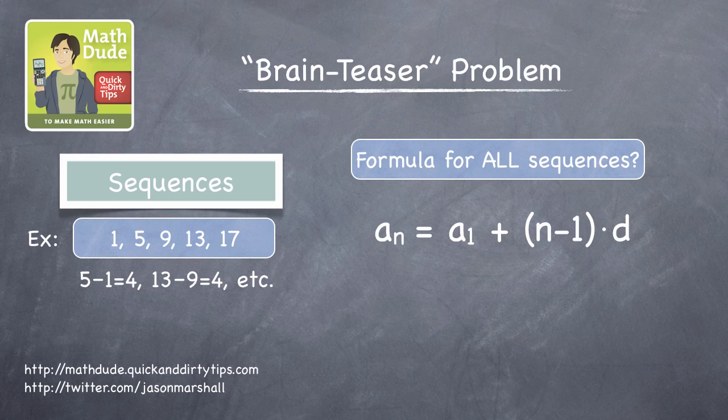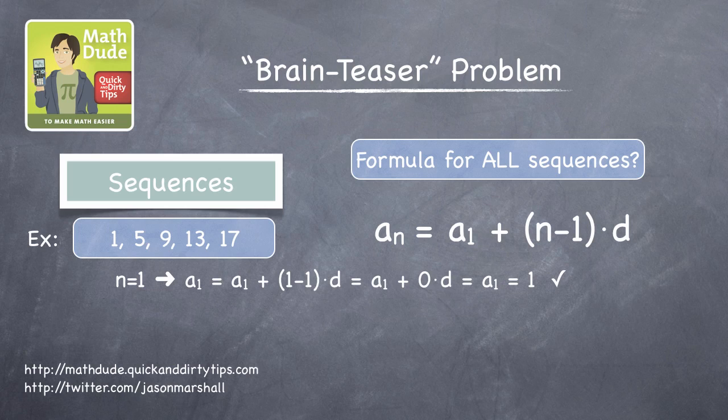So, let's try it out. For n equals 1, a sub 1 equals a sub 1 plus 1 minus 1 times d. Well, that's just a sub 1 equals 1, so it works here.